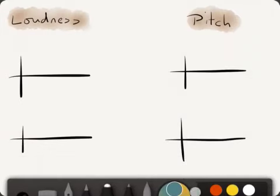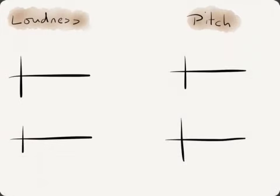That gives rise then to how sounds sound different. If we change the loudness, we change the amplitude. If we have a small amplitude, we have a quiet sound. If we have a large amplitude, we have a loud sound.